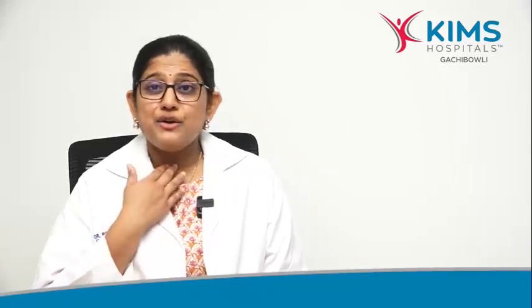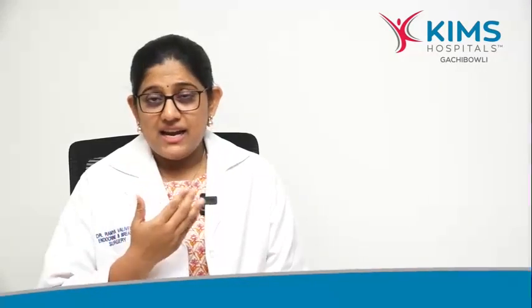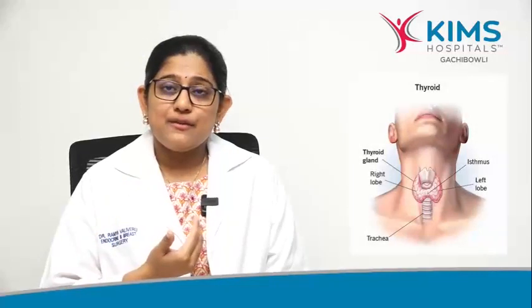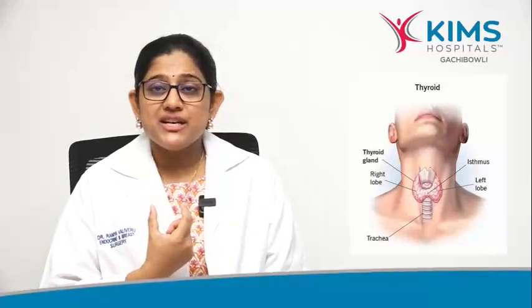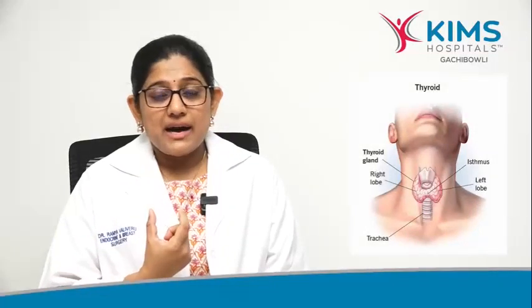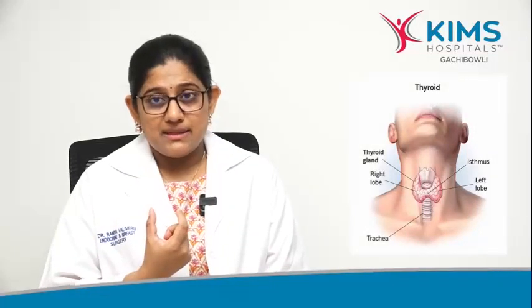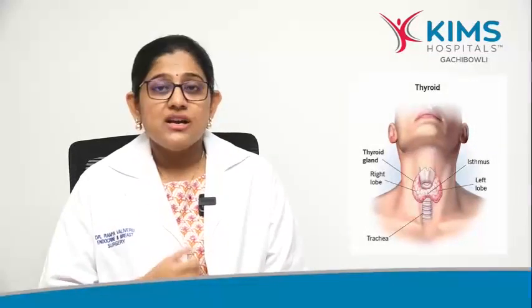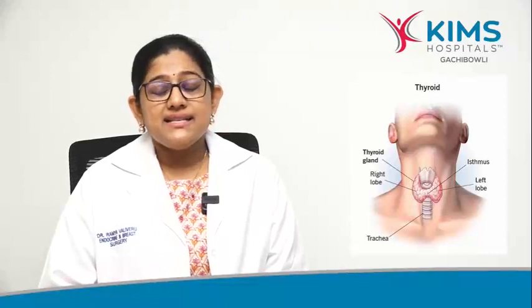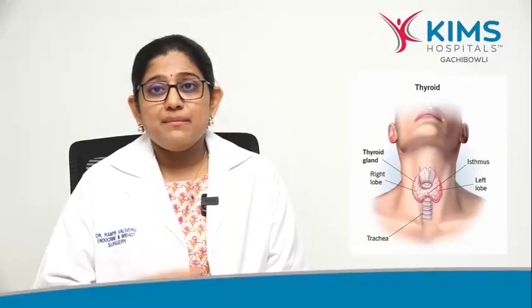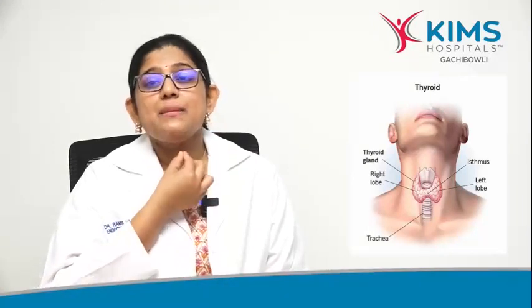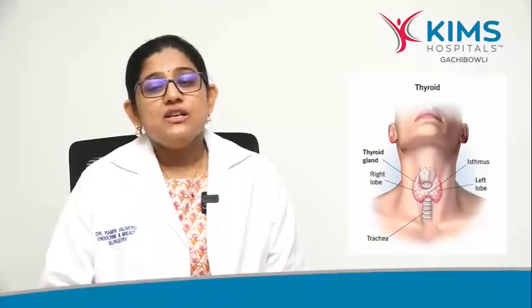The thyroid gland is a butterfly-shaped gland situated in the front of the neck. It has a right lobe, left lobe, and a bridging part called the isthmus or a bridge. In some individuals, there can be an extra pyramidal lobe.